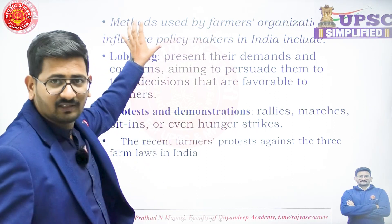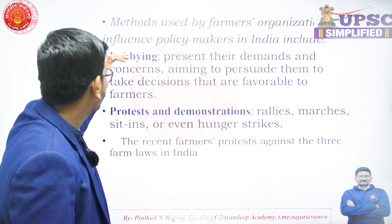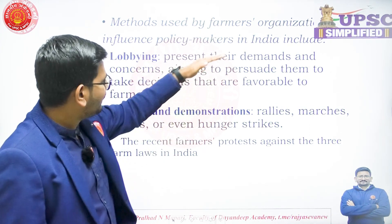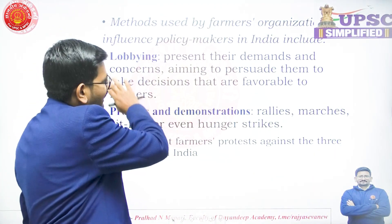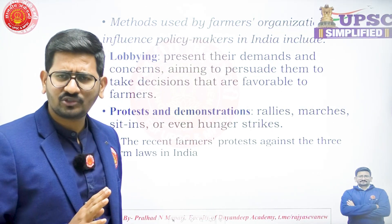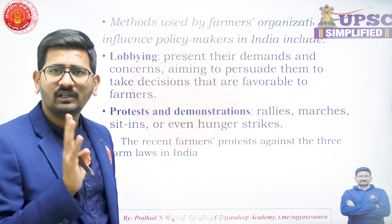Methods used by farmers organizations — the first method is lobbying. Lobbying means presenting their demands and concerns, aiming to persuade those in power to take decisions favorable to farmers. Though in India, lobbying is not officially or legally recognized — unlike in the US where it is — it means pursuing a person in a position of power in exchange for money, electoral votes, or support within the legal ambit. Many farmers organizations effectively lobby policymakers, particularly Members of Parliament.